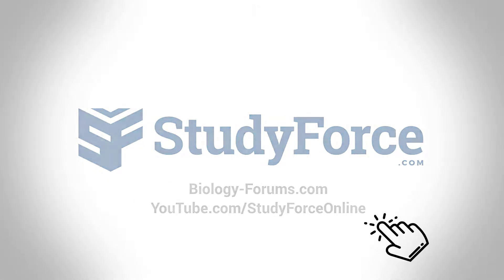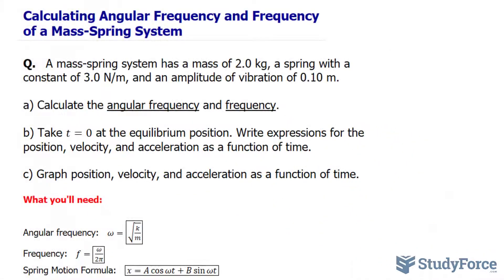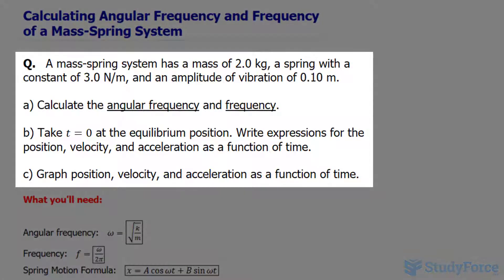In this tutorial, I'll show you how to calculate angular frequency and frequency of a mass-spring system. The question reads: a mass-spring system has a mass of 2.0 kilograms, a spring with a constant of 3.0 newtons per meter, and an amplitude of vibration of 0.10 meters.